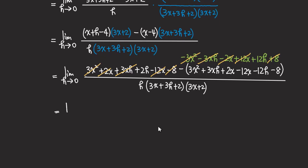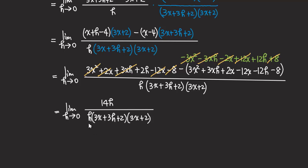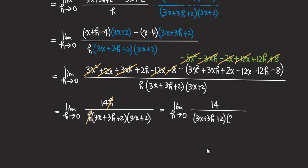The numerator simplifies to just 2h plus 12h, which gives us 14h at the top. The bottom still has h, then three x plus three h plus two, and three x plus two. The h's can get canceled. Because h is approaching zero, once you cross out the h, the zero-over-zero indeterminate form is gone. So we now have the limit as h approaching zero of 14 over three x plus three h plus two, times three x plus two.